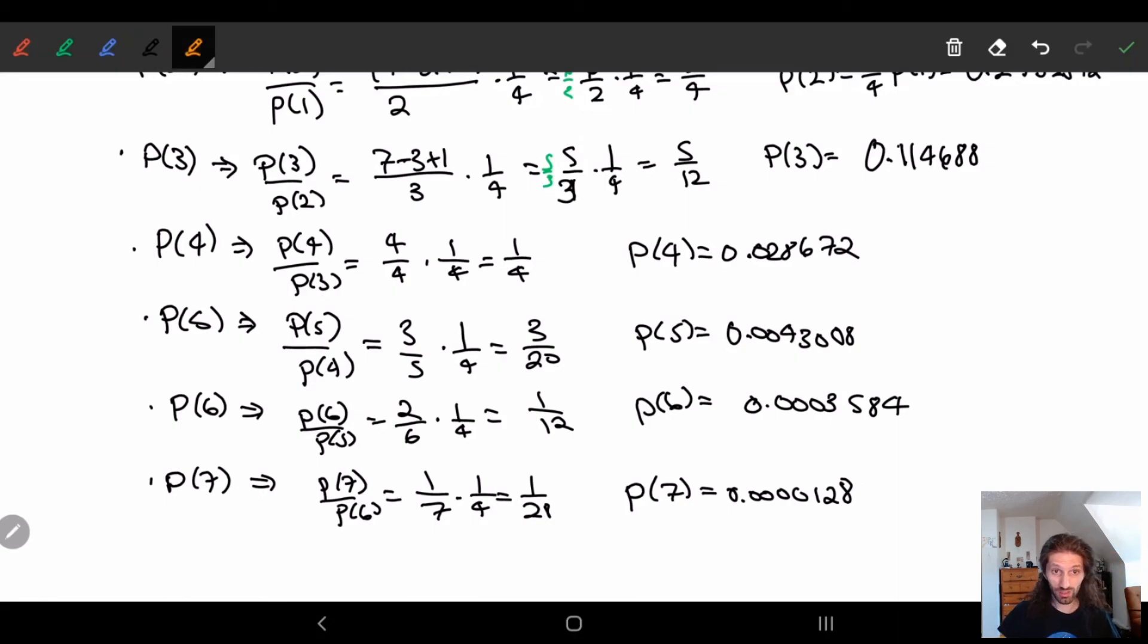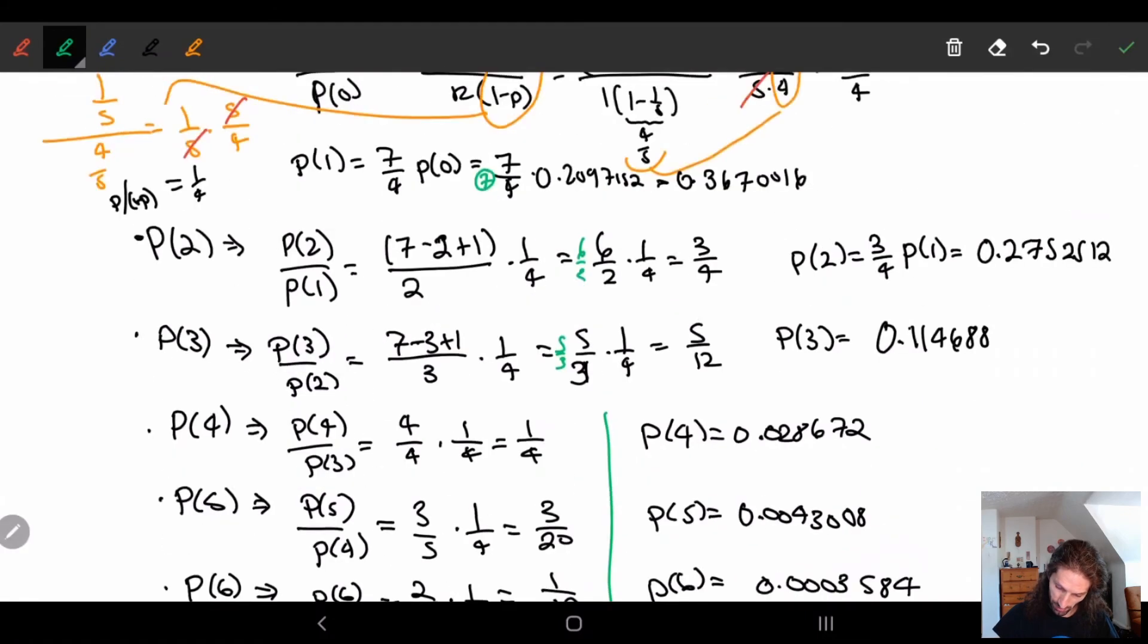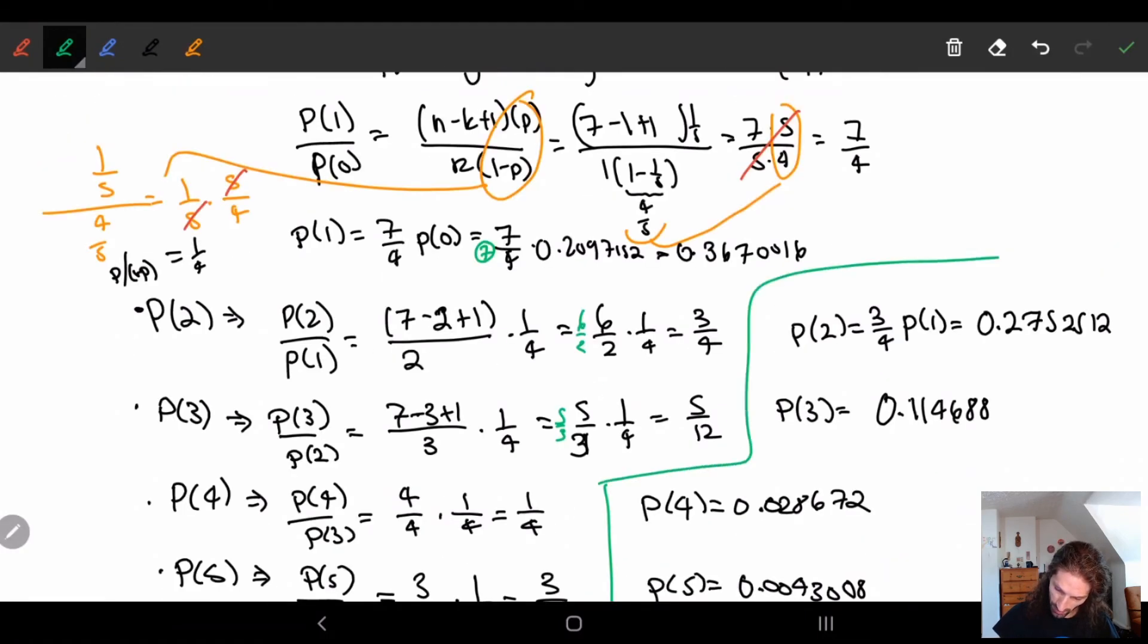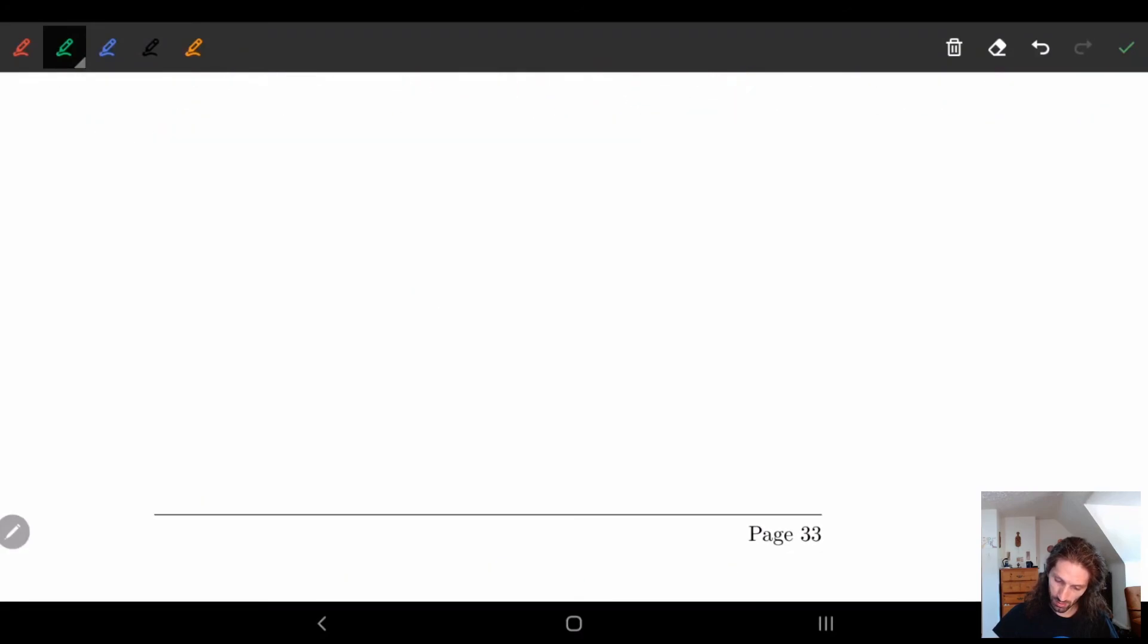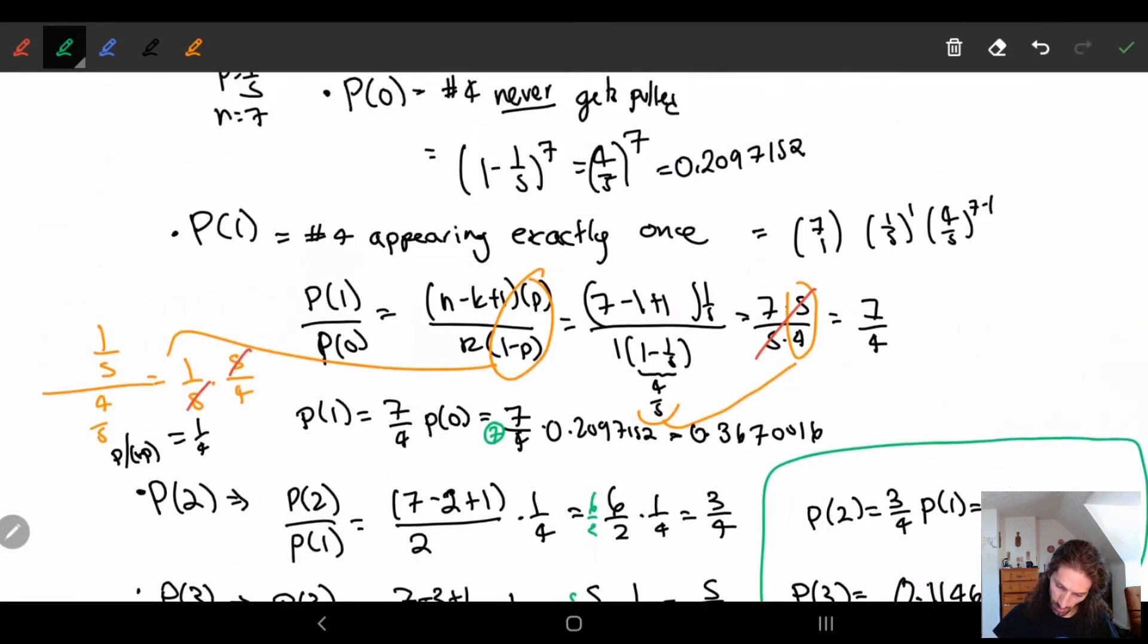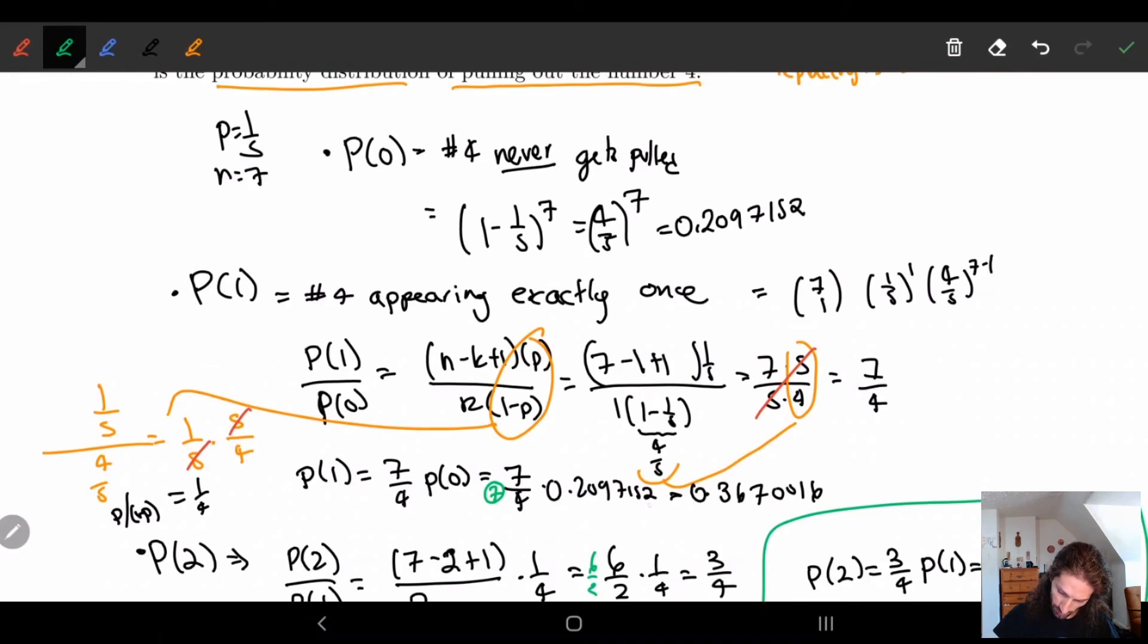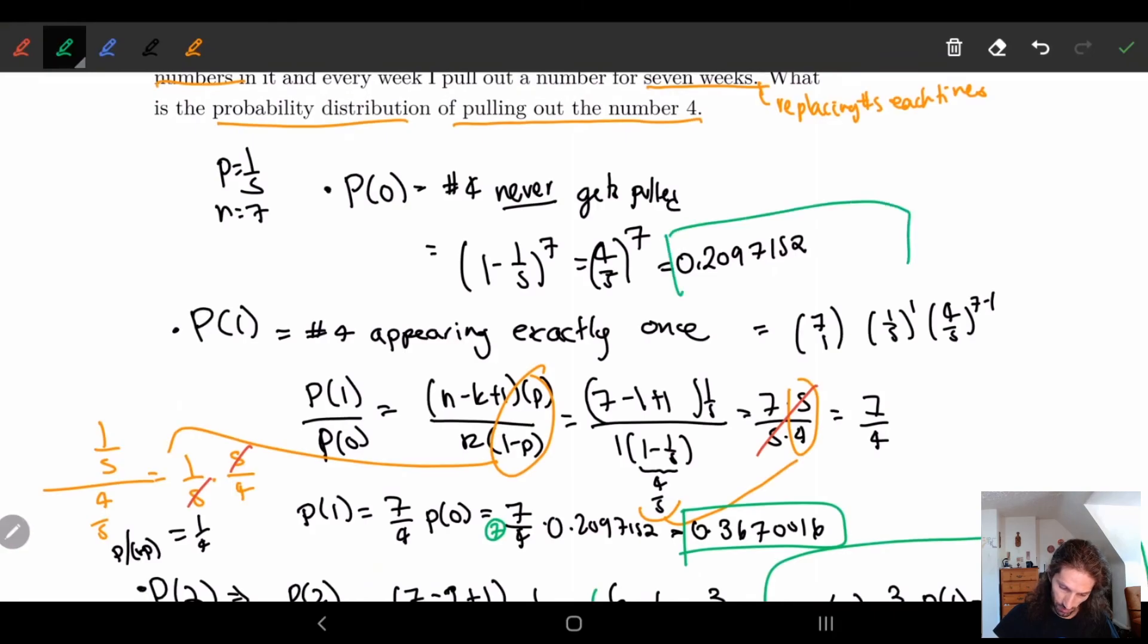And so our distribution, so remember our solution was asking what's the distribution. So the distribution is, remember, we need all the numbers. So I'm going to have all of these. I'll have p of one is equal to this. And then I'll have p of zero is equal to this. So you need all of these when you're talking about a distribution.